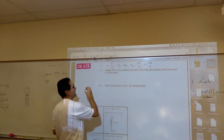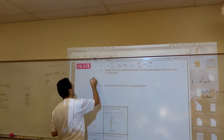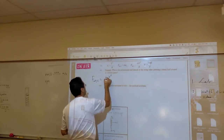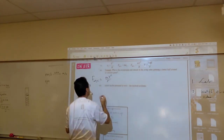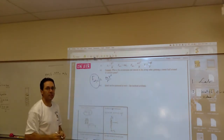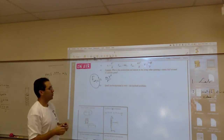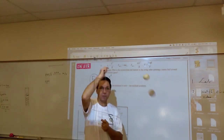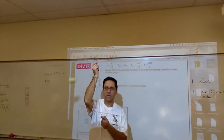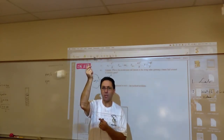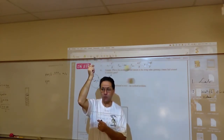Let's look at some applications. The F_net centripetal is MV squared over R, but this is going to change depending on the situation. In the case of the tennis ball whirling horizontally, the centripetal force is pretty much the tension in the string.